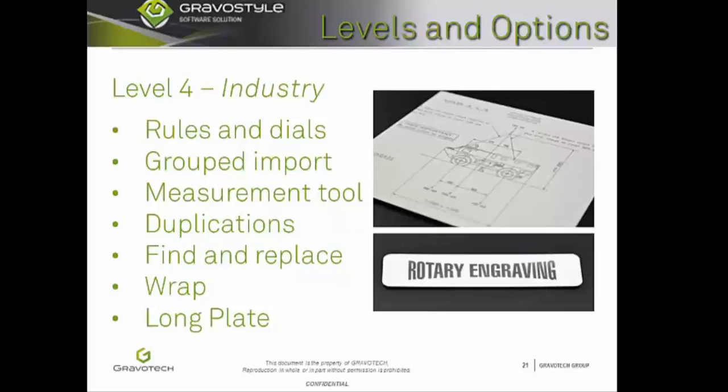The measurement tool allows you to create dimensions and engrave them as shown on the picture to the right. The Duplications Tool allows you to quickly copy linear, circular, or curved objects according to predefined criteria. Find and Replace allows you to replace text, a style, a font, and more in your composition. Wrap is a function that gives you the ability to force contours of an object to take a predefined form, giving you cool text effects — you can see this in the bottom right image on your screen. Lastly, the Long Plate function allows you to engrave a job several times on a plate that is larger than the engraving area on your machine.